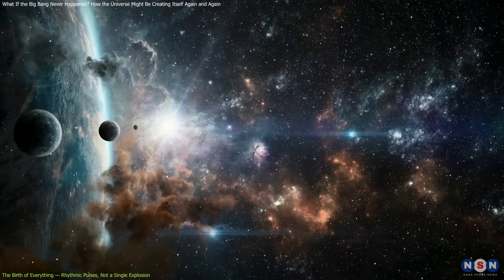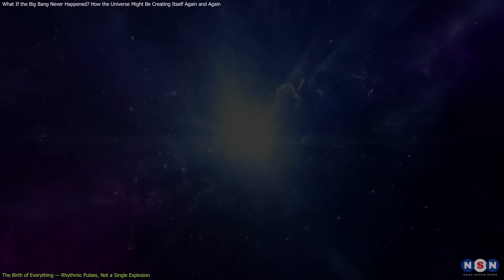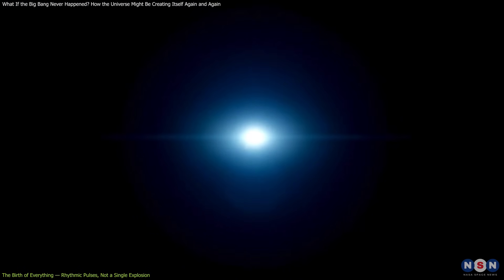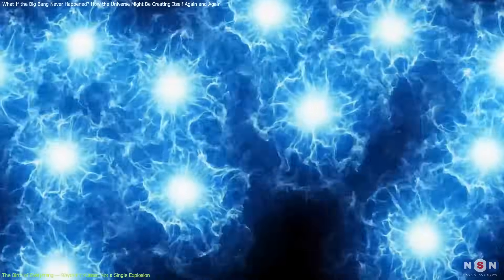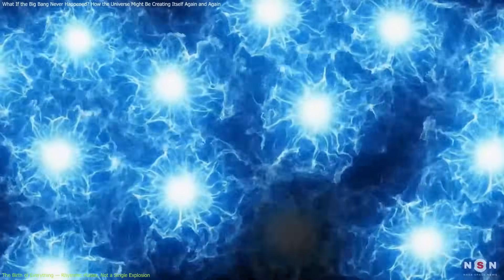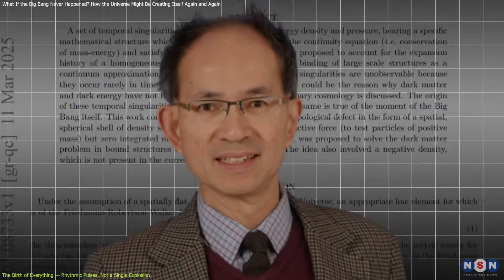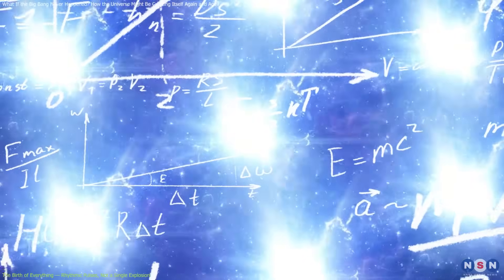Importantly, this approach doesn't discard current observations. It reinterprets them. Rather than stretching a single origin to account for all complexity, it proposes a dynamic unfolding, one surge at a time. The origin of these singularities remains unknown, much like the unanswered question behind the Big Bang. But Liu argues that uncertainty about the cause doesn't weaken the model. It simply shifts the question from one unexplained moment to a rhythmic pattern still governed by physical laws.